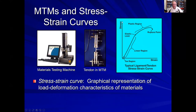Stress is on the y-axis — force over the cross-sectional area — and strain is the change in length on the x-axis. When we initially pull on the tendon, we get a toe region, which occurs because of the crimp in the collagen fibers. Then we enter the elastic or linear region, also called the Hookian region for Robert Hooke who invented the law of springs. In this elastic region, we can load the tendon or ligament and then unload it, and it will return back to its original shape.